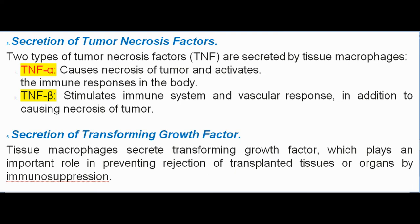Secretion of Tumor Necrosis Factors: Two types of tumor necrosis factors (TNF) are secreted by tissue macrophages. TNF-alpha causes necrosis of tumor and activates immune responses in the body. TNF-beta stimulates the immune system and vascular response, in addition to causing necrosis of tumor. Secretion of Transforming Growth Factor: Tissue macrophages secrete transforming growth factor, which plays an important role in preventing rejection of transplanted tissues or organs by immunosuppression.